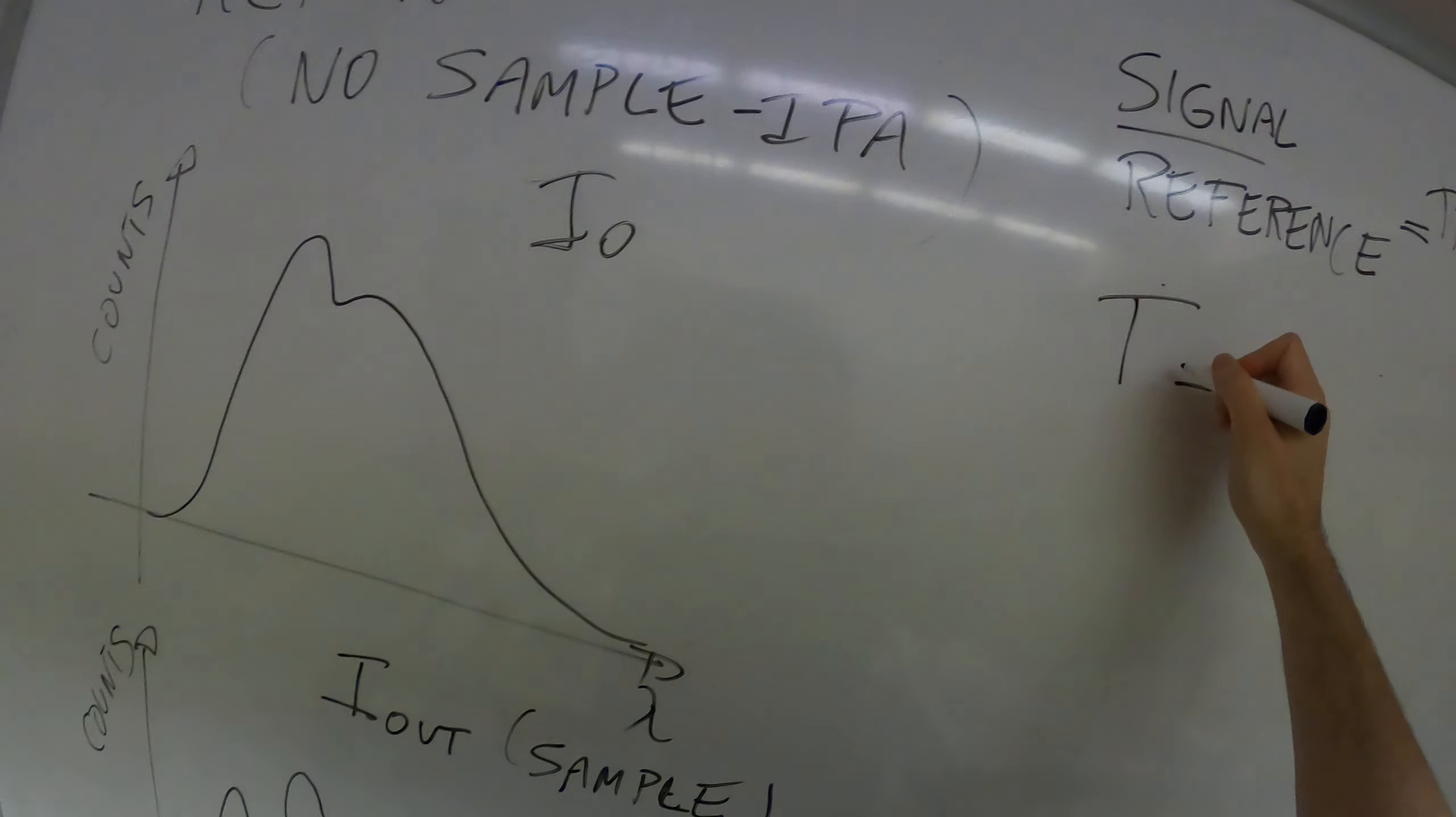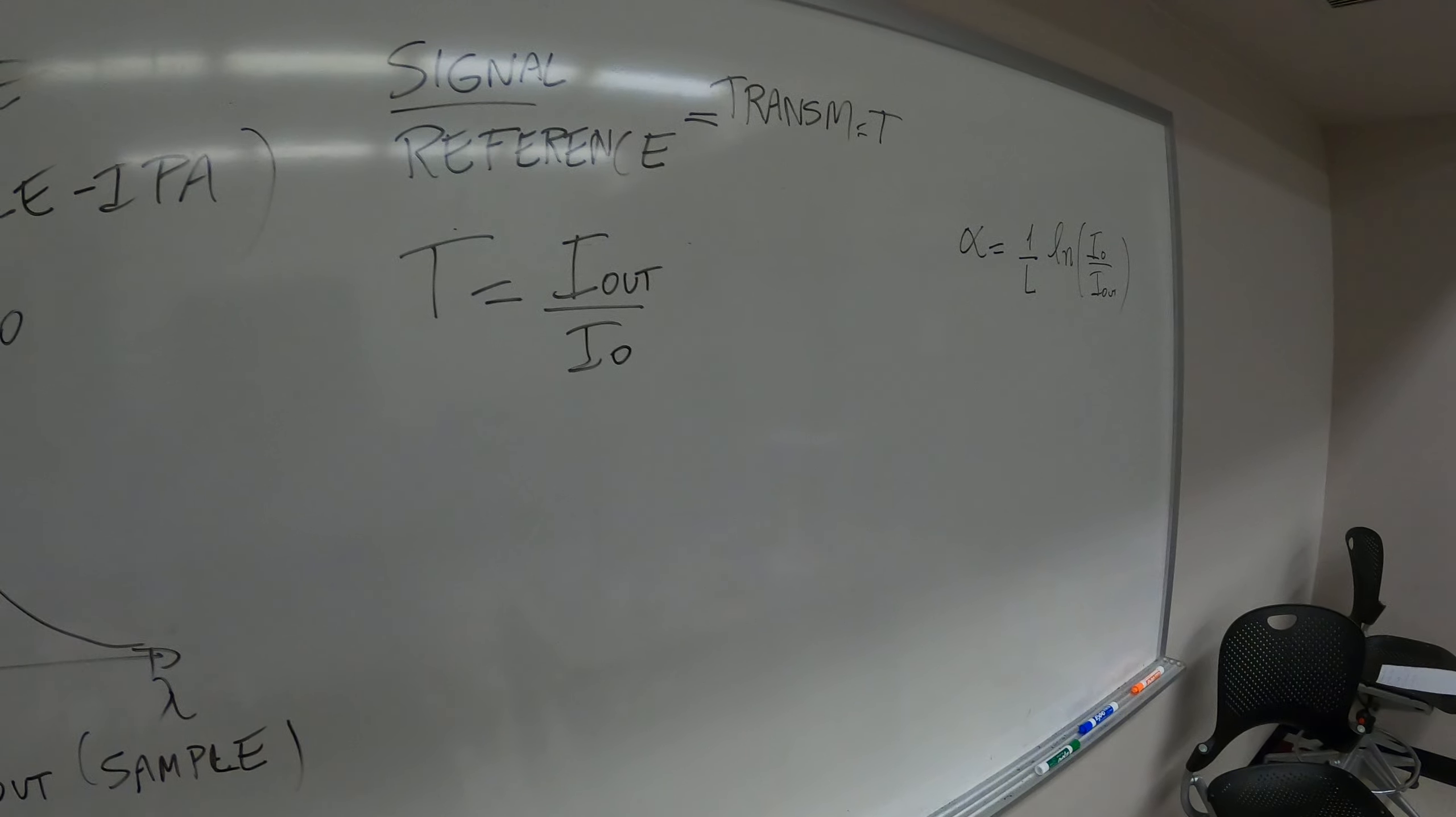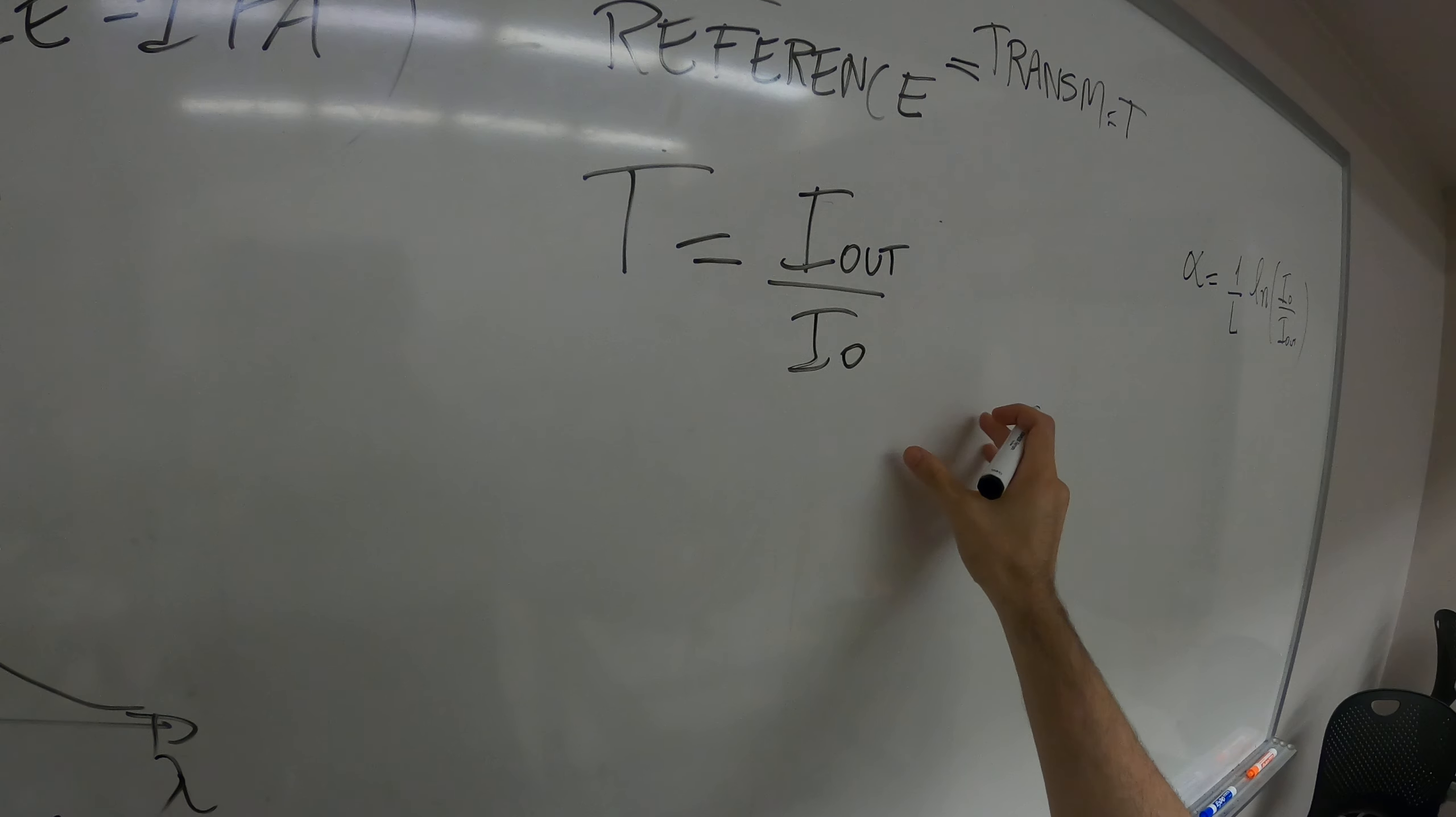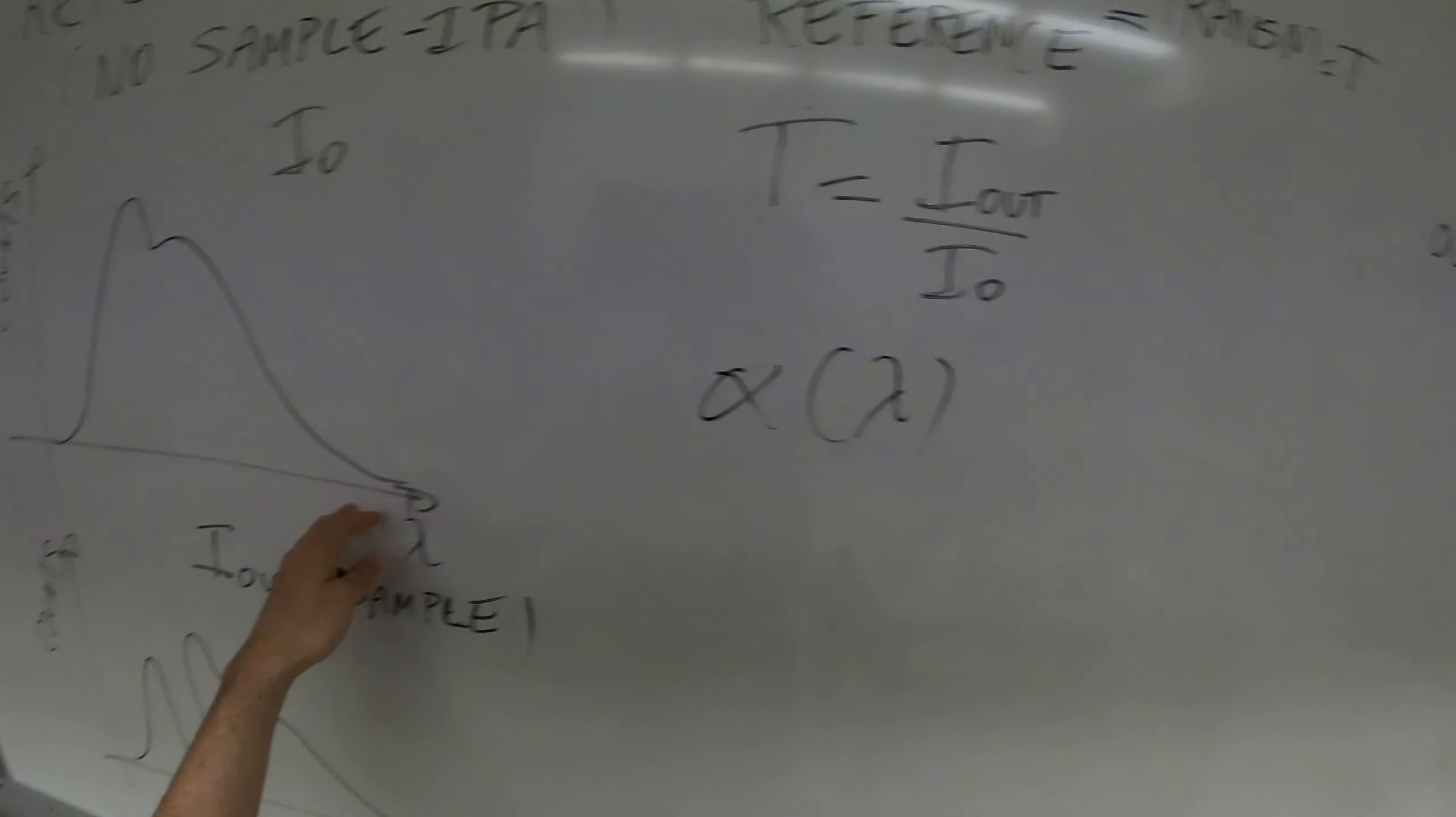T is equal to I out divided by I_0, which is exactly the expression there. It's the inverse of the expression, with that we can calculate alpha. And alpha is a function of the wavelength, so you need to do this operation for each wavelength.